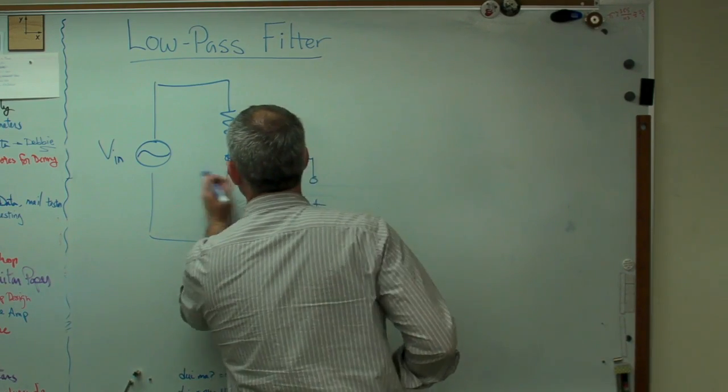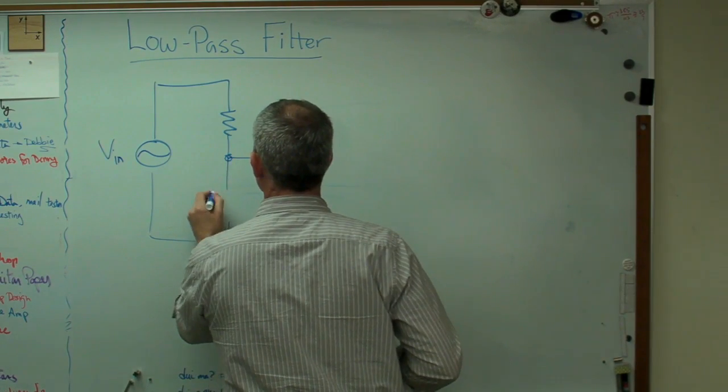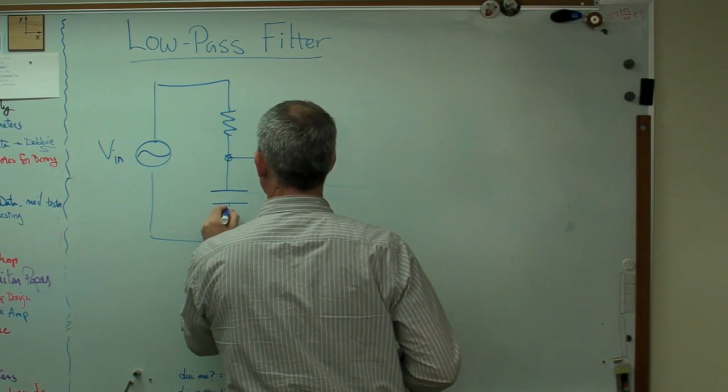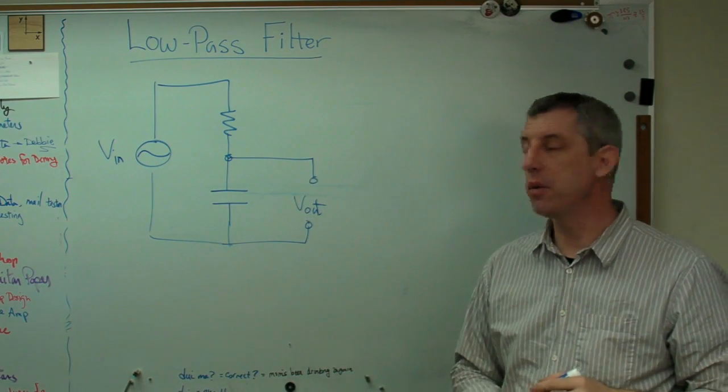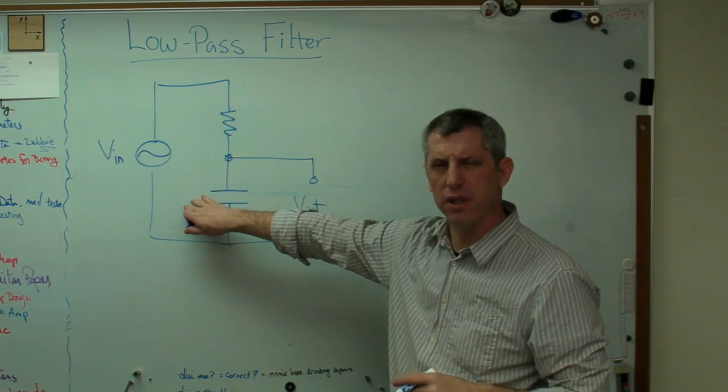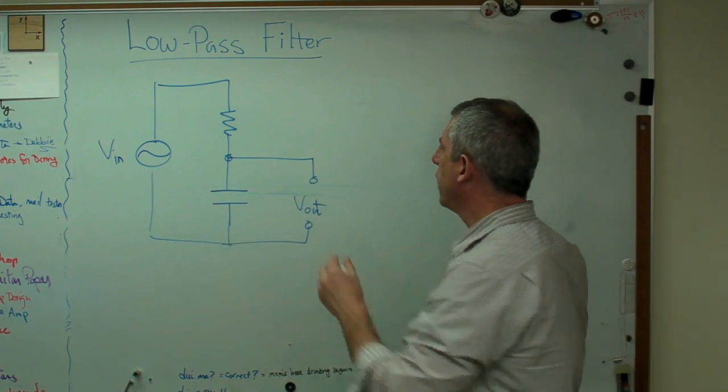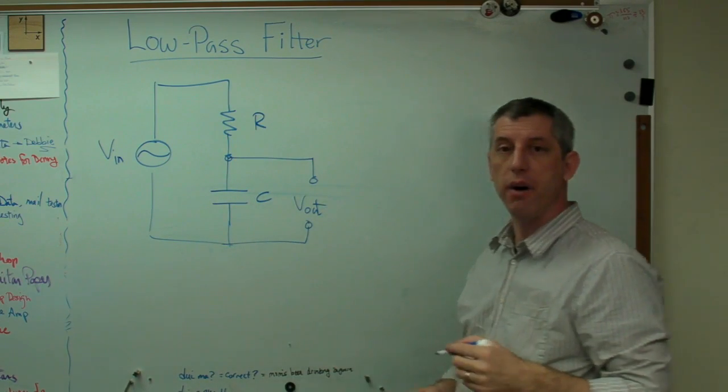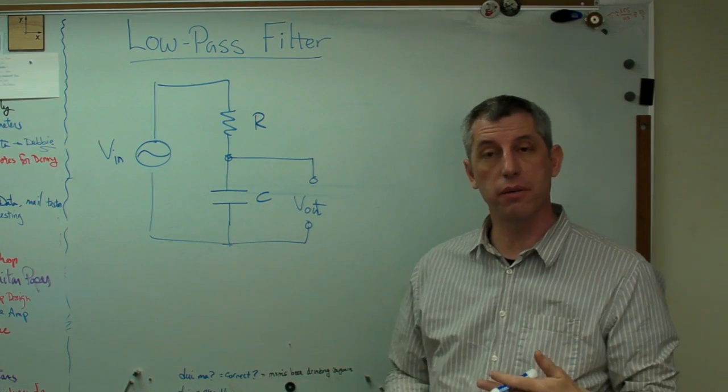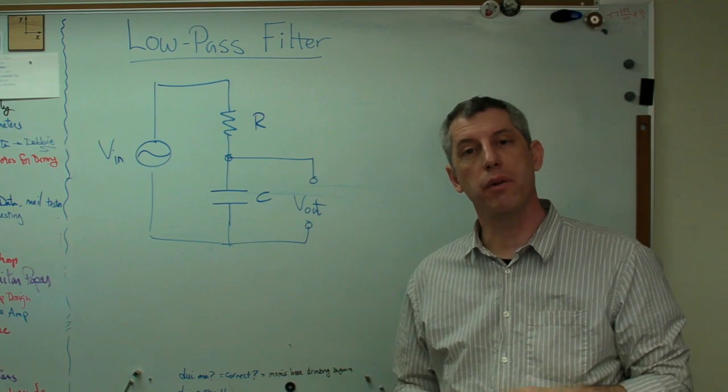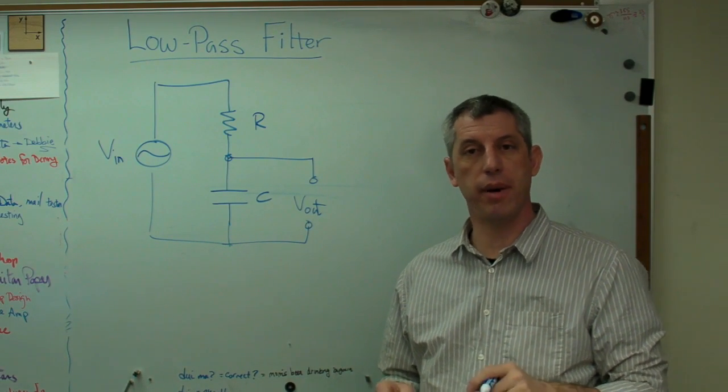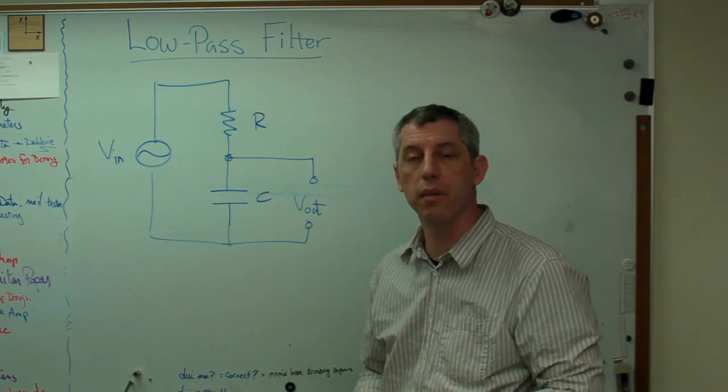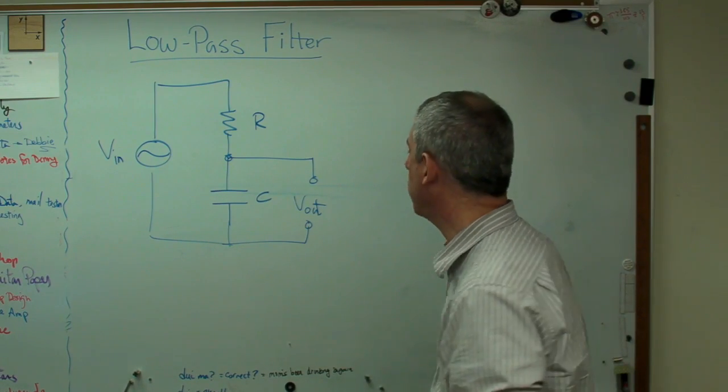So instead of this being another resistor on the low-pass filter, this is now a capacitor. Slightly different component, but you can see this still looks an awful lot like a voltage divider. And it behaves almost like a voltage divider. The only difference is now how it behaves is a function of frequency. And the way we figure that out turns out the mathematics is almost exactly the same as it was for a voltage divider. So that's handy.